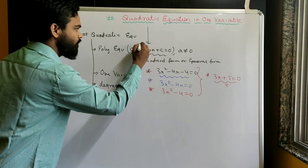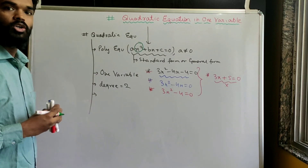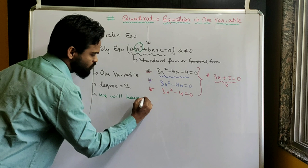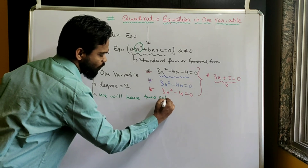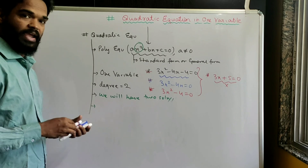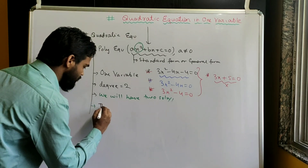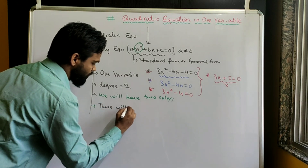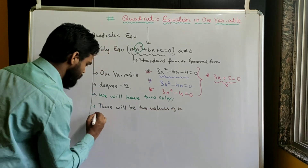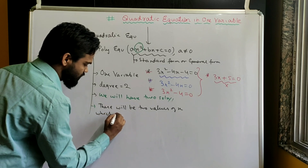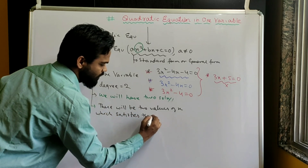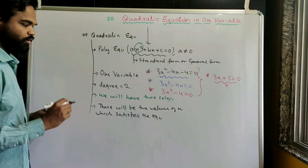Because the degree of x is 2, we will have two solutions — meaning there will be two values of x which satisfy the equation.